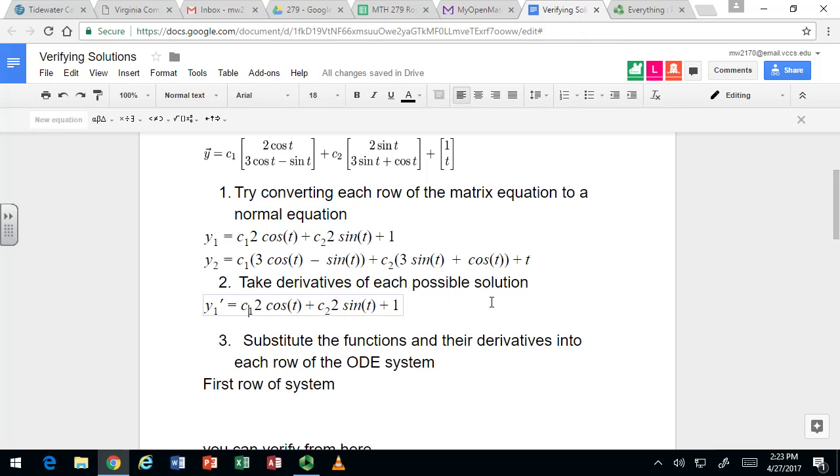All right, so we're going to take derivatives of the y1 and y2 equations. So just normal trig derivatives here. Derivative of cosine is negative sine, and derivative of sine is cosine, and derivative of one is zero, so that goes away.